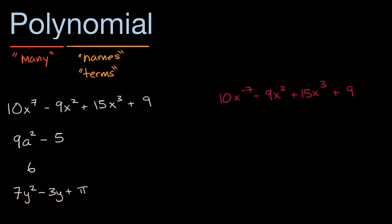A polynomial is something that is made up of a sum of terms. So, for example, in this first polynomial, the first term is 10x to the seventh. The second term is negative nine x squared. The next term is 15x to the third. And then the last term — maybe you could say the fourth term — is nine. Let me underline these. So these are all terms. This is a four-term polynomial right over here.